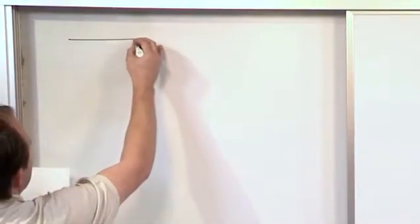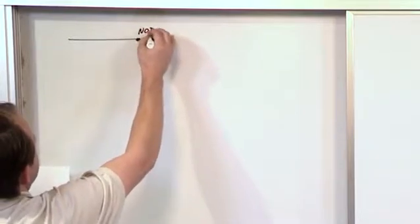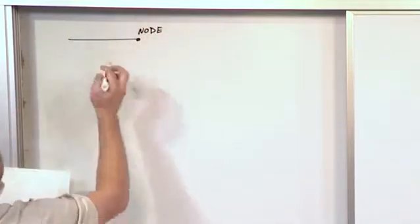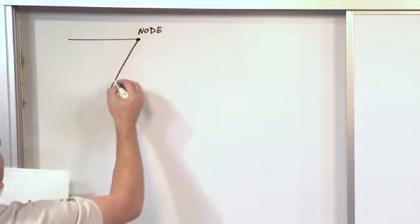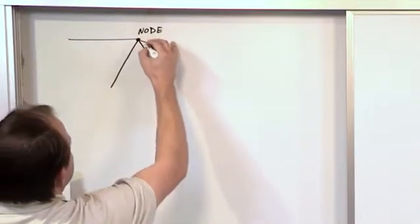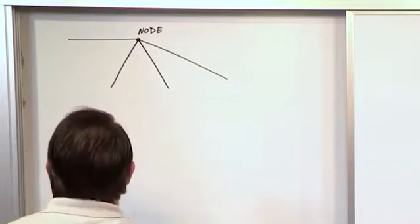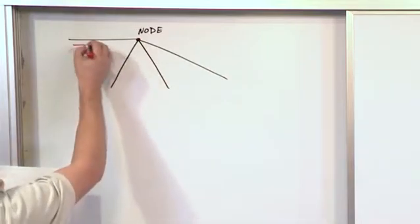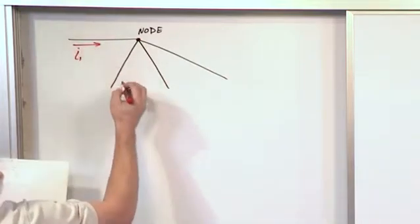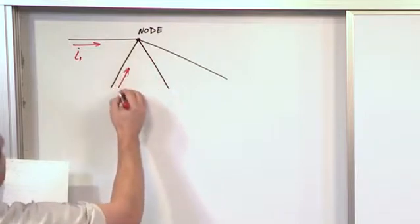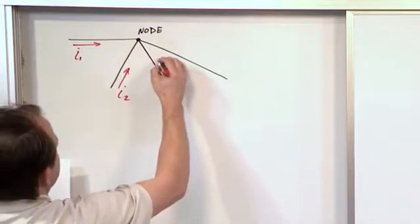So let's say that we have a node here. These are things that we deal with all the time in circuits. We have a node and there's four branches coming into this node, and so I'm going to label them. This one we're going to call I1, this one we're going to call I2, this one we're going to call I3.